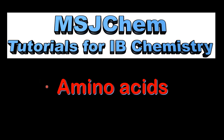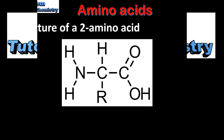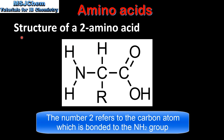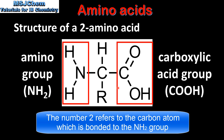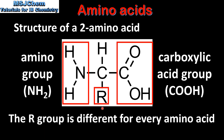This is MSJChem. In this video I'll be looking at the structure and bonding of amino acids. An amino acid has an amine or amino group, which is the NH2 part of the molecule. On the opposite side of the molecule we have a carboxylic acid group. The R group, which is a side chain, is different for every amino acid.